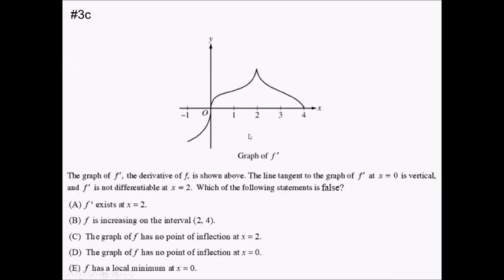For this problem, we've got a graph of f prime, and we're told that the tangent to f prime at zero is vertical, and that f prime is not differentiable at x equals two — this is a cusp. We want to know which of five statements is false. Statement A: f prime exists at x equals two. Since we have a solid point on the graph of f prime there, the function exists there — f double prime does not exist because of the cusp, but f prime itself is continuous at that spot. So this is a true statement.